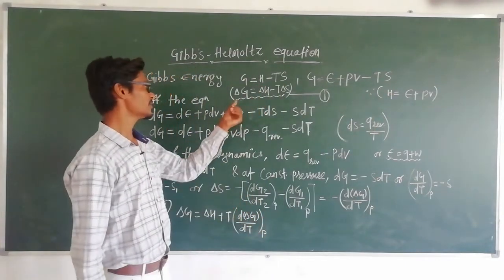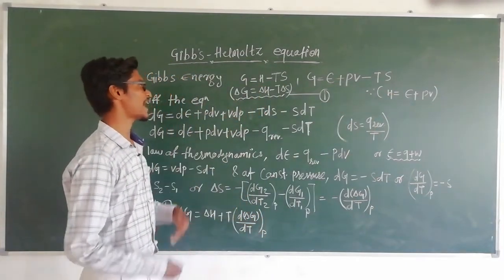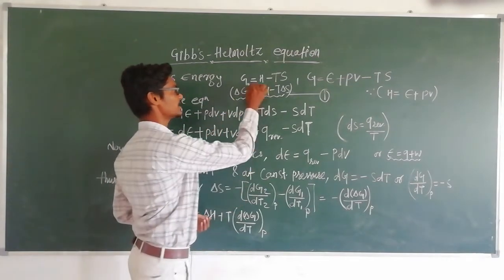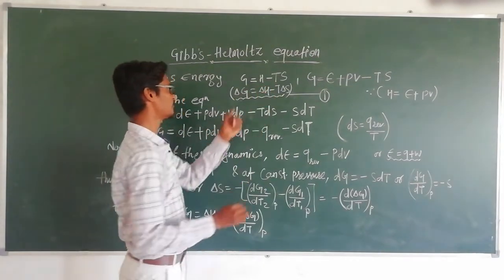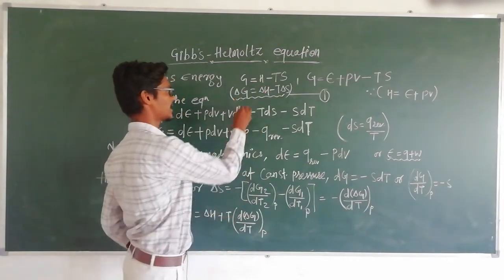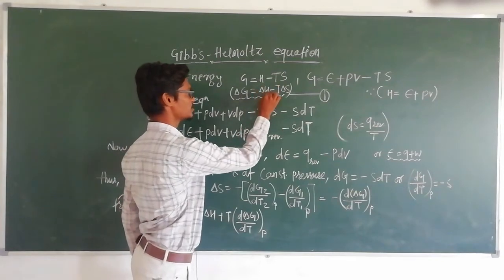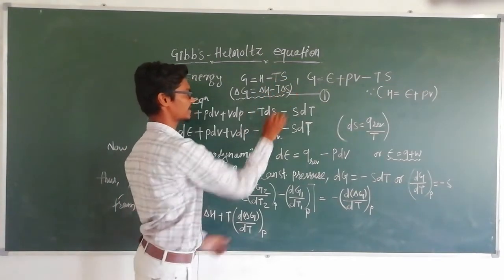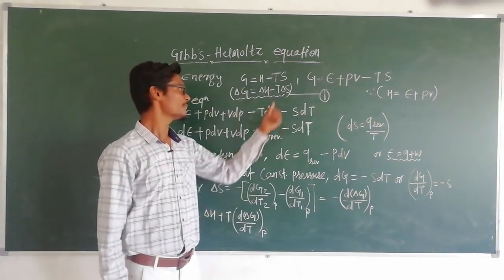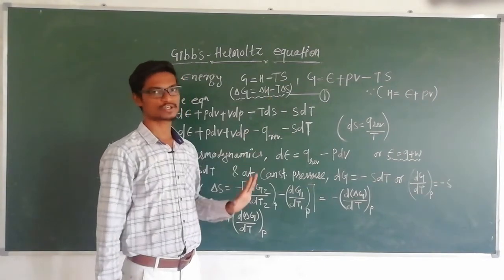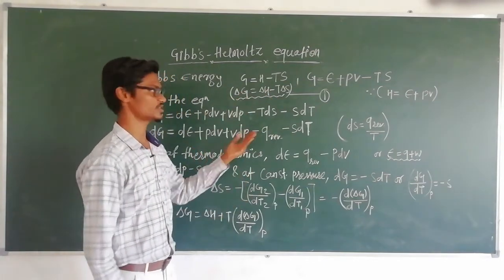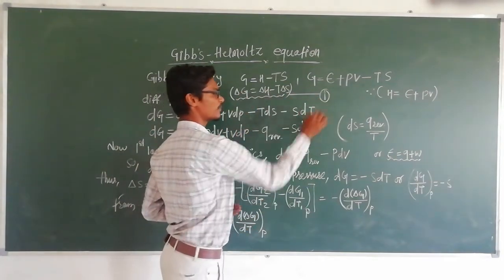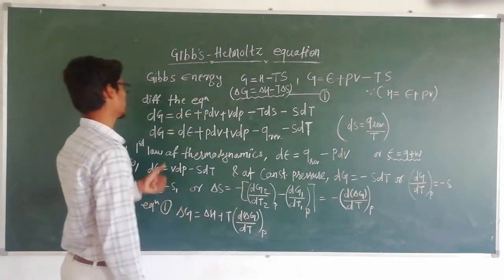For a reversible process isothermally, we can write this equation in the form of delta G equals delta H minus T delta S. Here the temperature remains constant after differentiation. This gives us equation number 1.